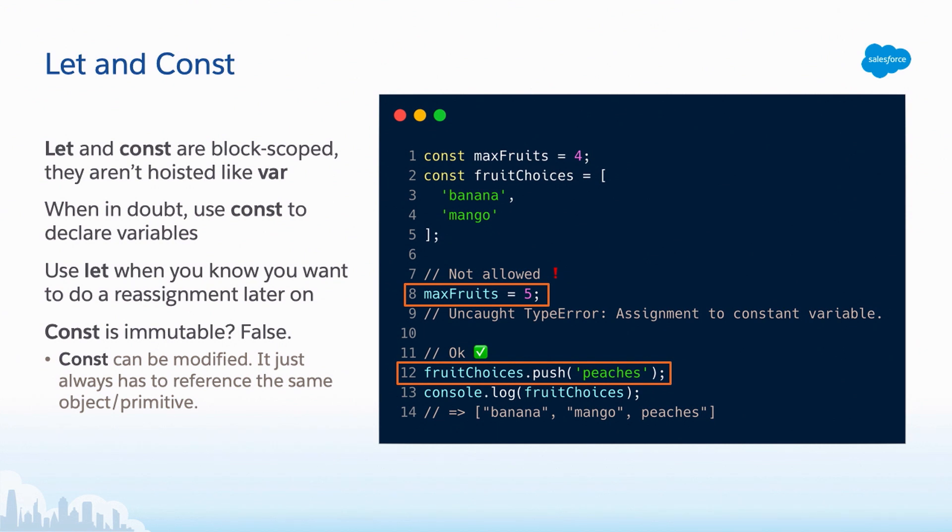And just to show you an example of that, on line one, we have max fruits. And that's set to four. And that's just a number of primitive value, right? Whereas on line two, we have fruit choices and array. On line eight, if we try to change max fruits and reassign that from four to five, we're going to get a type error. And we get told that that's not allowed. But on line 12, when we try to push into our fruit choices array and just add something to it, that's completely valid JavaScript. And that's totally fine, because we're not changing that original reference. It's still the same array. It's just got something else in it.